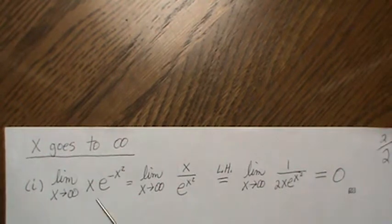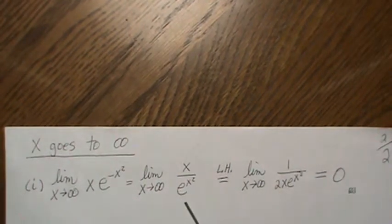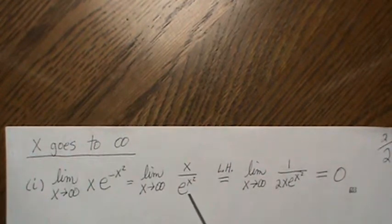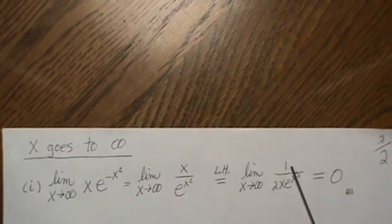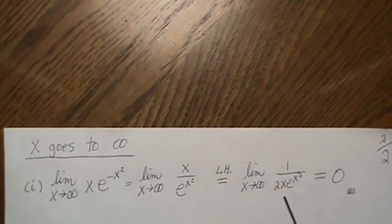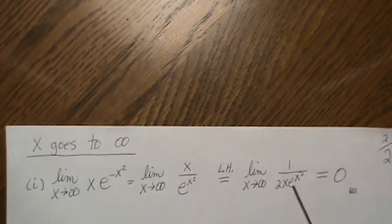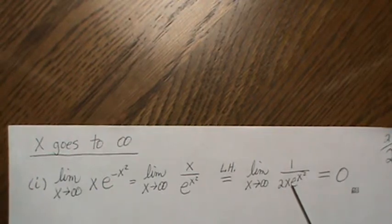So we have the fraction infinity over infinity. Take the derivatives, you get one over 2X e to the X².